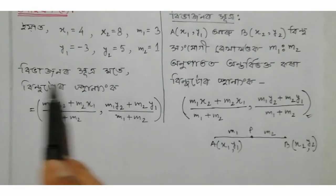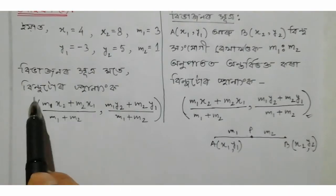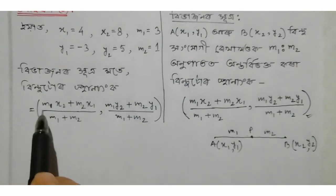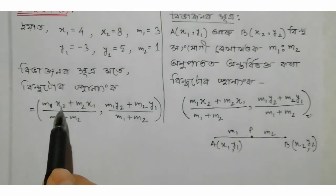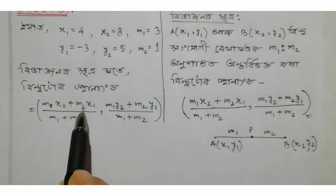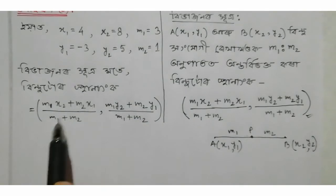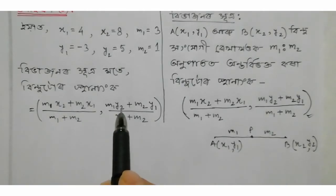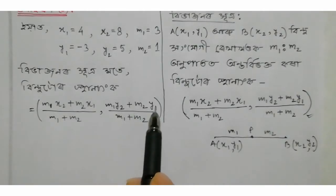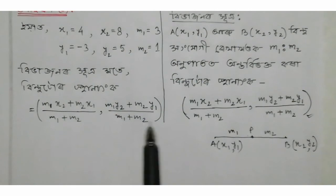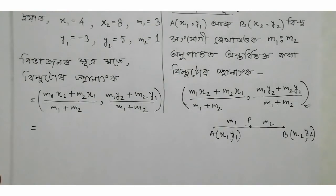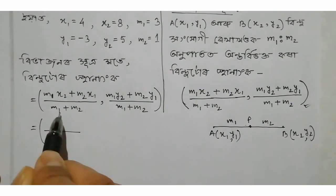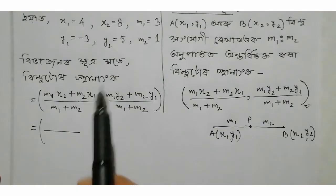We have point P. I will write the section formula here: M1·x2 plus M2·x1 divided by M1 plus M2, and M1·y2 plus M2·y1 divided by M1 plus M2. I will write this here, students.